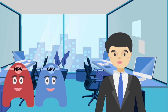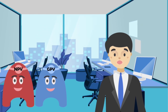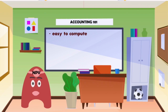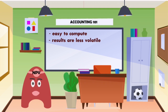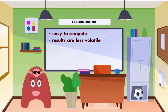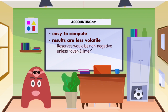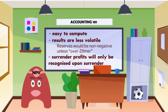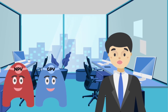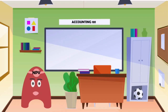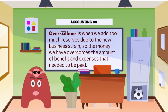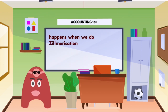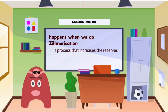I finally know a lot more about you guys, but can you make it easier by telling me your advantages? NPV has several advantages: it is easy to compute since the formula is driven with only two parameters, and results are less volatile. When using the NPV method for conventional participating products, future bonuses would emerge gradually as surplus and not be capitalized up front. Reserves would be non-negative unless over-zilmerized. Surrender profits will only be recognized upon surrender. Over-zilmerization is when we add too much reserves due to the new business stream, so the money overcomes the amount of benefit and expenses that need to be paid. Basically, it happens when we do zilmerization — a process that increases the reserves — which is good for the company in general, but just don't overuse it.